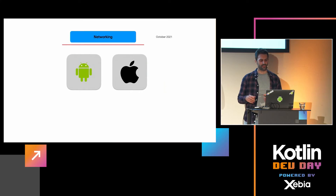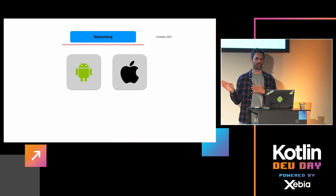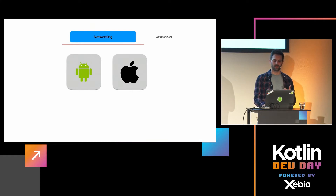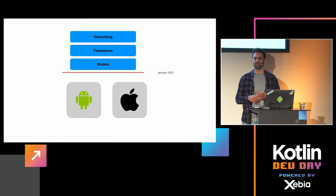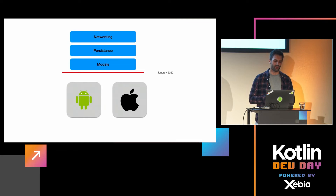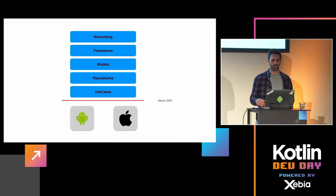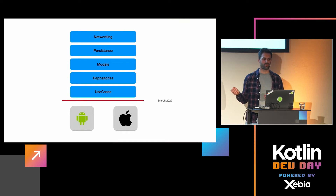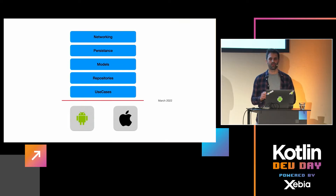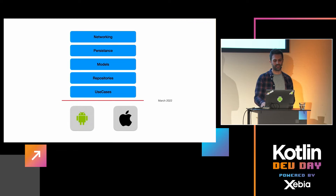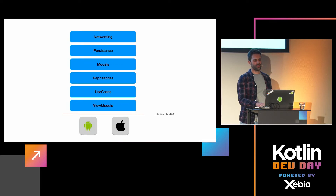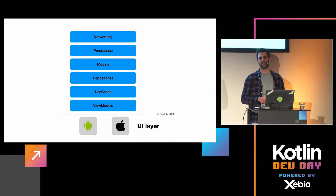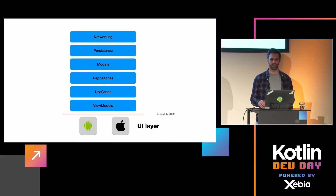Here is how it's working for us now. At the beginning, in October 2021, we shared only network requests — the rest was in native Android and iOS. Then we introduced persistence and models, so all the data classes were in shared code. We went further to share repositories and use cases, though that created a lot of boilerplate in our view models. So now we are introducing even view models into KMM, leaving Android and iOS to handle only the UI layer.